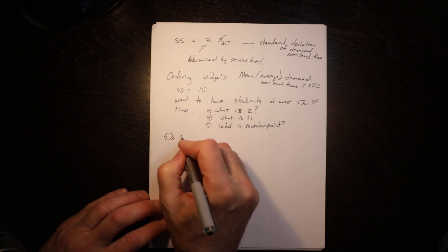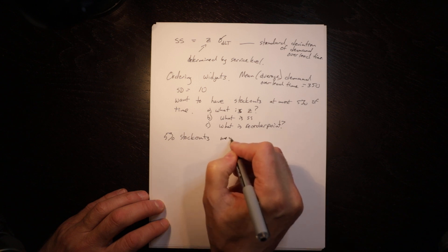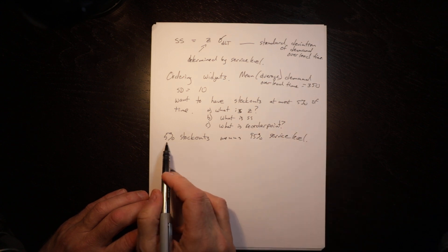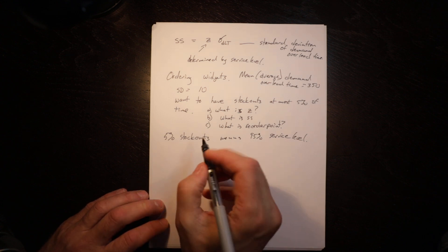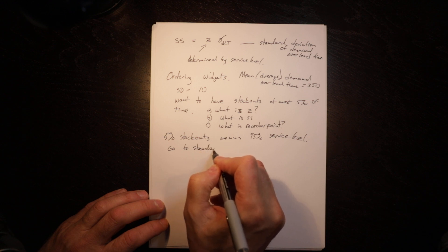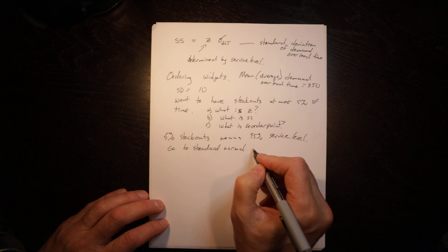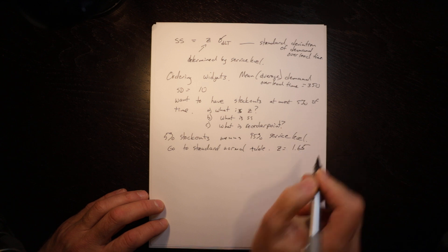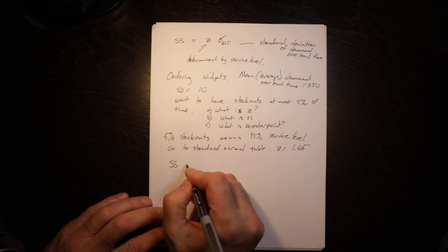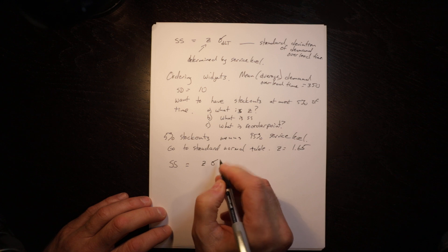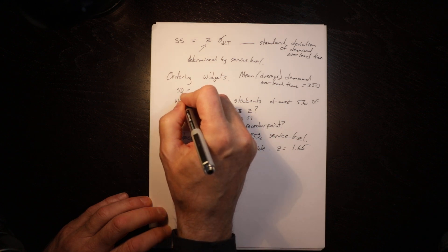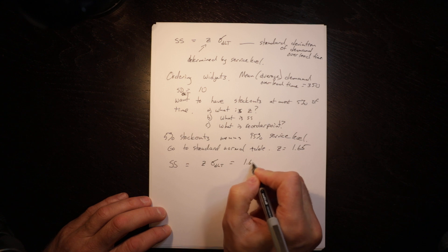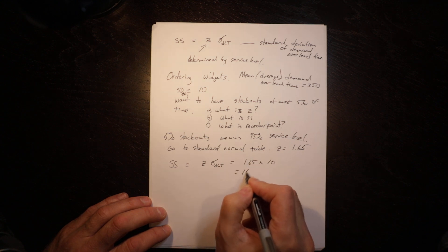5% stock-outs means a 95% service level. If we want to stock out 5% of the time, it means we want to have enough 95% of the time. We go to the standard normal table — I won't show one here — and we look up 95% to get a z value equal to 1.65. Then, safety stock is equal to z times the standard deviation of demand over lead time: 1.65 times 10 equals 16.5 widgets.